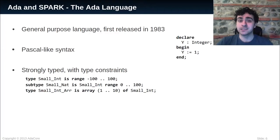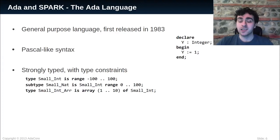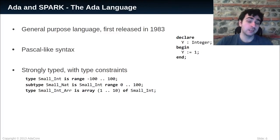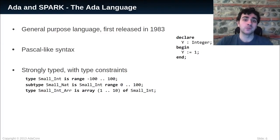It's a strongly typed language and users can provide additional constraints. For example, SmallInt is a type of integer ranging from minus 100 to 100. We can define a subtype of SmallInt, SmallNat, with an additional constraint of being ranged from 0 to 100.